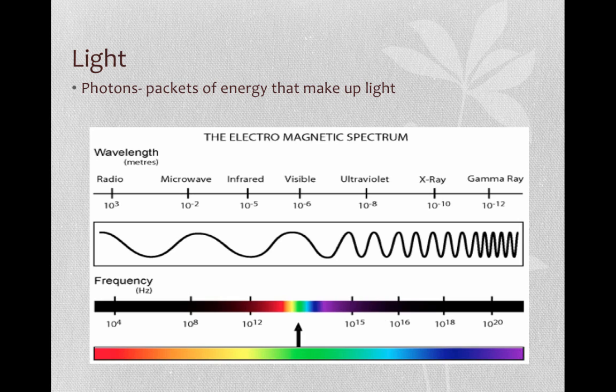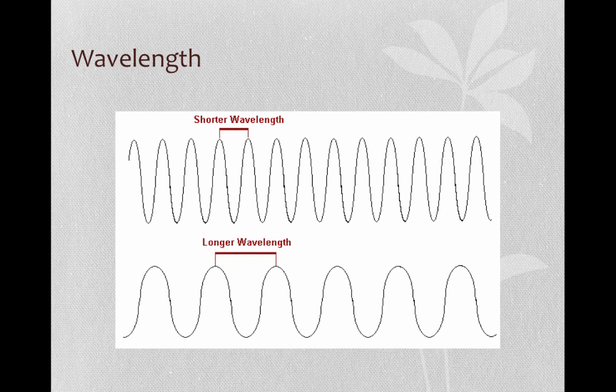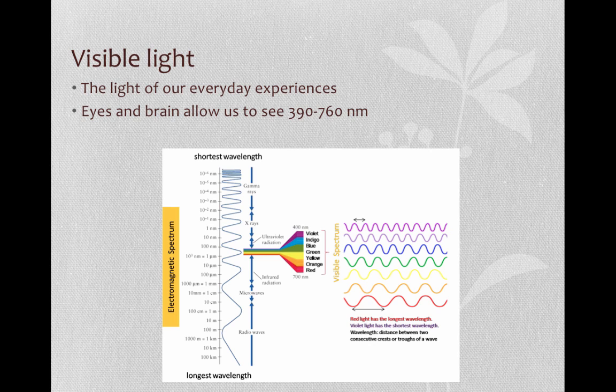Visible light is part of the electromagnetic spectrum. The electromagnetic spectrum consists of all types of radiation that travel through space as periodically energy-changing electrical and magnetic forces. The fluctuation of forces are measured in wavelengths. A wavelength is the distance between the crests of two waves. It can vary from kilometers to nanometers, which are a billionth of a meter. Visible light is the light of our everyday experiences. Our eyes and brains allow us only to see wavelengths from about 390 to 760 nanometers. 400 nanometers is violet or purple and about 700 nanometers is red.